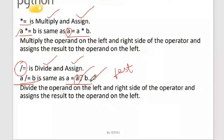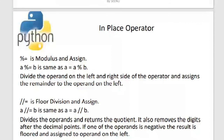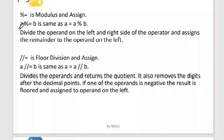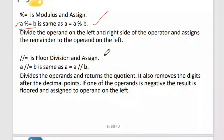Even if you write it the longer way it doesn't matter, but adopting this convention is faster. Next is %= which means modulus and assign: a %= b is faster than a = a % b. The modulus divides the operands on both sides and assigns the remainder to the left side. This is a very handy operator used in many programs.